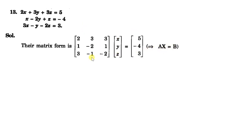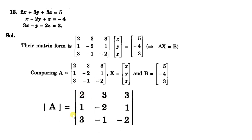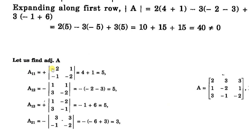So we first find the determinant of A by expanding along the first row. We get 2 multiplied by the determinant of the remaining elements after leaving the first row and first column, which gives 4 minus of minus 1, that is 4 plus 1 equals 5. So it becomes 2 multiplied by 5. Then minus 3 multiplied by minus 5, plus 3 multiplied by 5. This determinant is 40, which is not equal to 0, so the matrix A is non-singular and its inverse will exist.